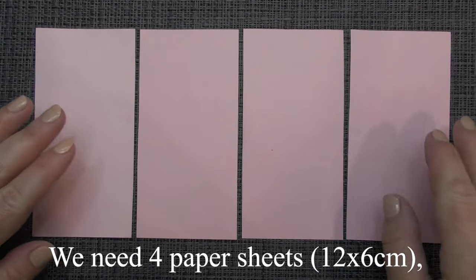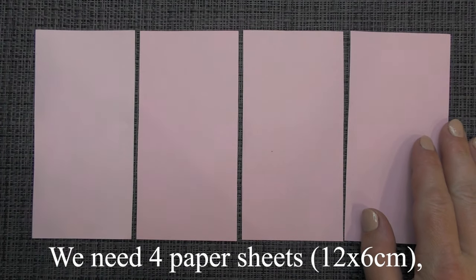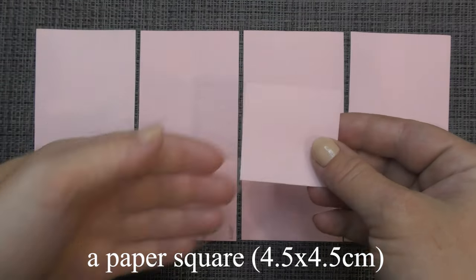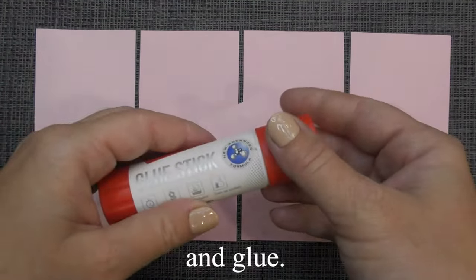We need four paper sheets, a paper square of this size, and glue.